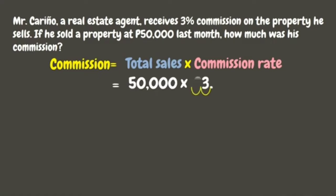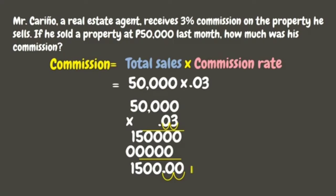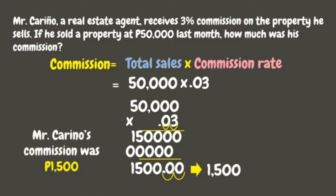One, two — there! Now, let's multiply. Since we have two decimal places, let's move the decimal point in the product two times to the left. There you go! Our final answer is one thousand five hundred. This means that Mr. Carino's commission was one thousand five hundred pesos. Wonderful!